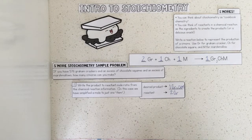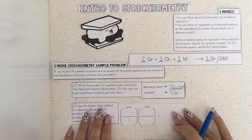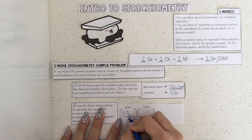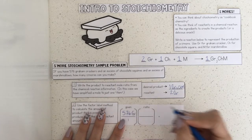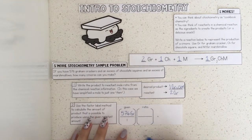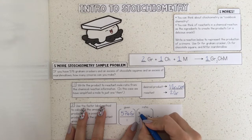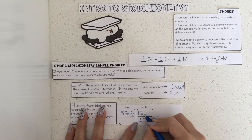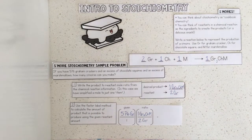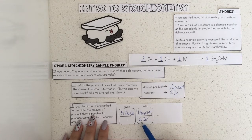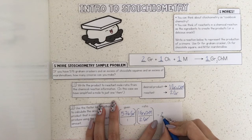To calculate the amount of product possible to produce using our given reactant amount, we're going to set up a dimensional analysis problem. We're given 576 graham crackers, and we're going to use our ratio to cancel out our units. Graham crackers have to go on the bottom. We're using this ratio with s'mores on top, because we want to be left in those units. Now we can cancel out the graham cracker units, and we would do 576 divided by 2 to figure out how many s'mores we can make.